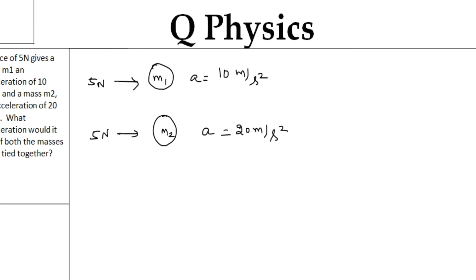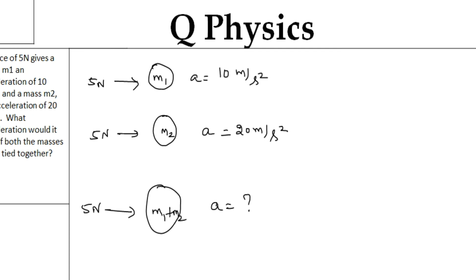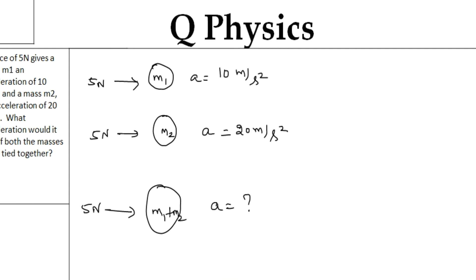The question asks: if the two masses were combined — that is, m1 plus m2 — and the same 5 newton force is applied, what is the resulting acceleration? If we combine the two-mass system, what acceleration does the 5 newton force produce?